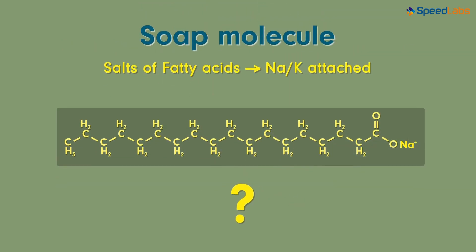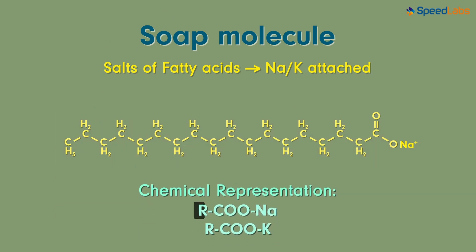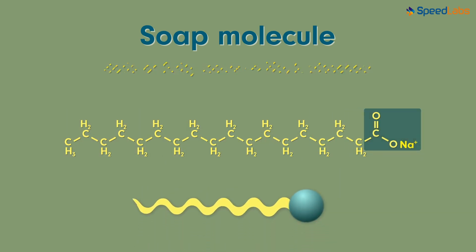How can they be represented though? Chemically, soaps are represented as R-C-double-O-N-A or R-C-double-O-K depending upon whether it has sodium or potassium attached to it. Now it's obvious that these kind of huge structures cannot be written precisely every time. That is the reason why we represent soap molecules using this structure.